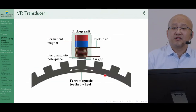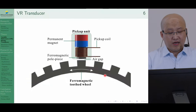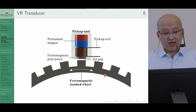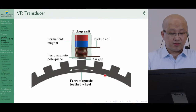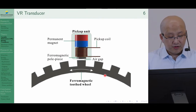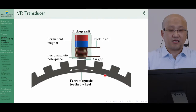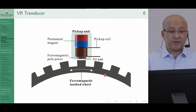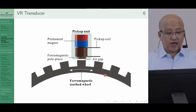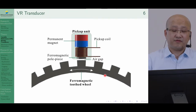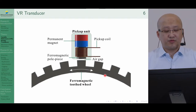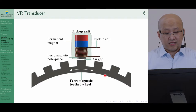What is variable reluctance? I will show its basic structure. There are two major parts: the pickup unit and the rotational tooth wheel. An air gap allows relative rotation between them. In the pickup unit, there is a permanent magnet that provides a static magnetic field. The pickup coil is used for power generation. There are also pole pieces made of ferromagnetic material, which show high performance for conducting flux, and work with the tooth wheel to change the flux path.